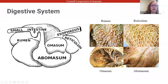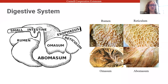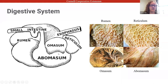At birth, lambs and kids do not have a functioning rumen because they are only drinking milk. There is a muscular fold called the esophageal groove that directs milk through to the omasum and abomasum, bypassing the rumen — because milk does not need to be fermented like other feedstuffs. The suckling action stimulates this groove to form.